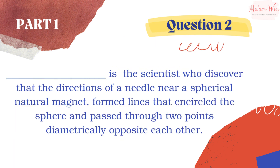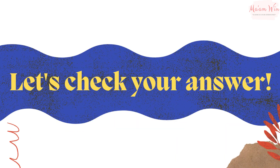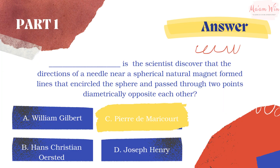Question number two: blank is a scientist who discovered that the direction of the needle near a spherical natural magnet forms lines that encircle the sphere and pass through two points diametrically opposite each other. Choose the letter of the best answer. Let's check your answer — the right answer is letter C.